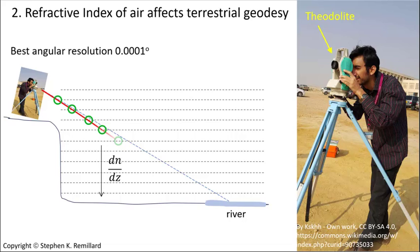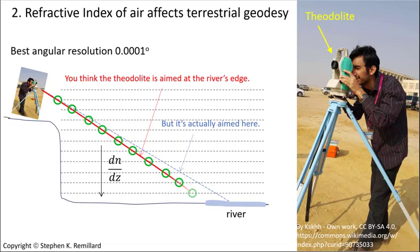As light crosses each imaginary boundary between strata, it refracts and changes direction, causing the instrument to point in one place while the operator is viewing another place.